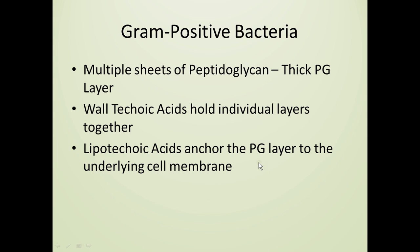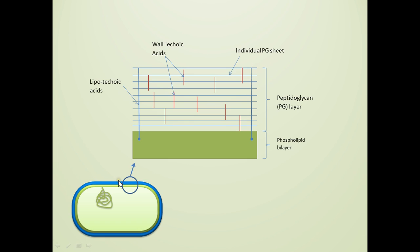This is our typical gram-positive bacterium. It has two parts to its cell envelope: the underlying cell membrane, which is a phospholipid bilayer, and a thick peptidoglycan layer. The peptidoglycan layer is composed of multiple sheets held together by wall teichoic acids. The entire thick peptidoglycan structure is then anchored to the underlying phospholipid bilayer using lipoteichoic acids.